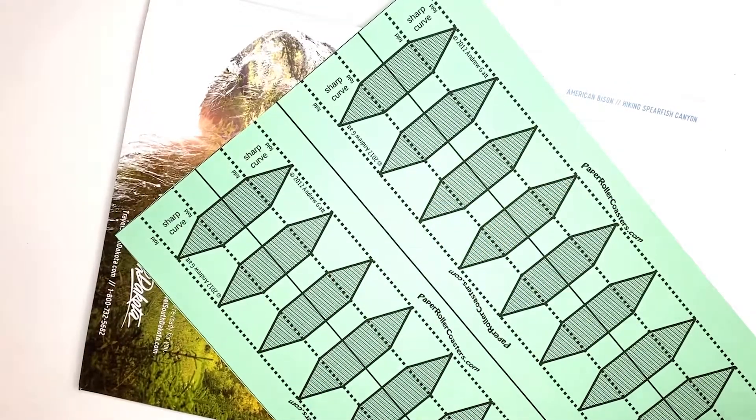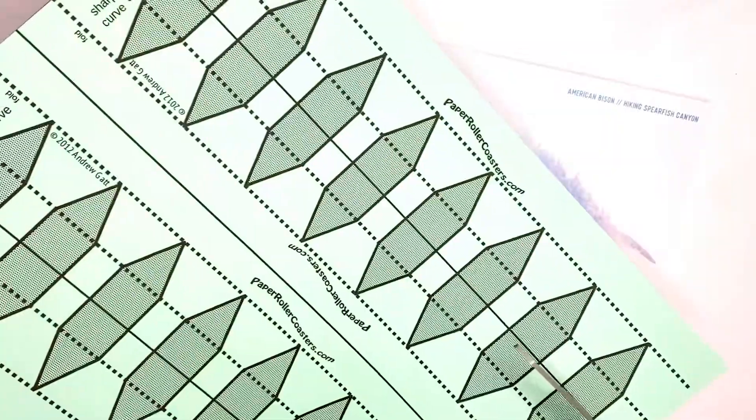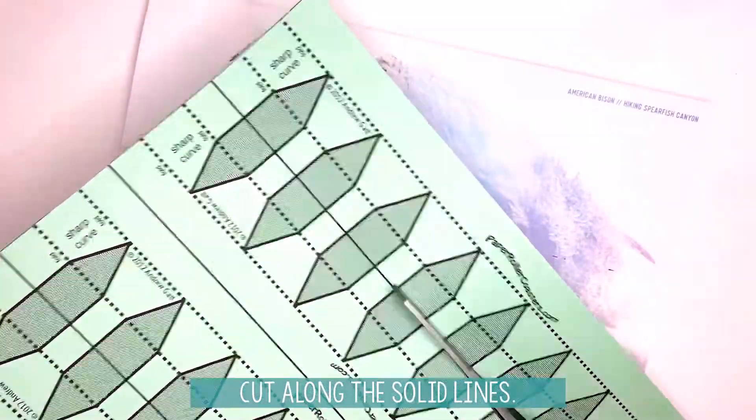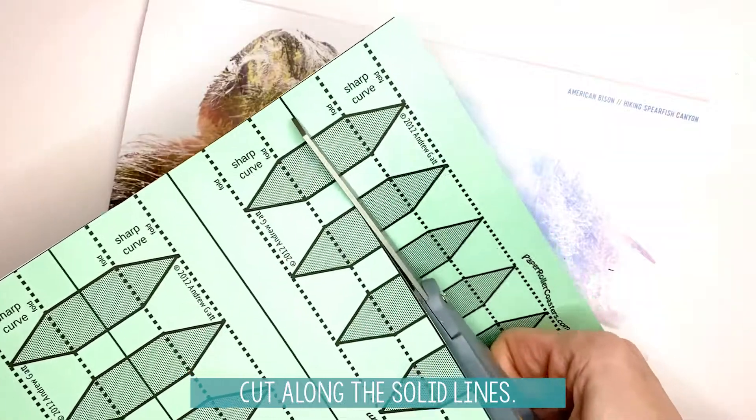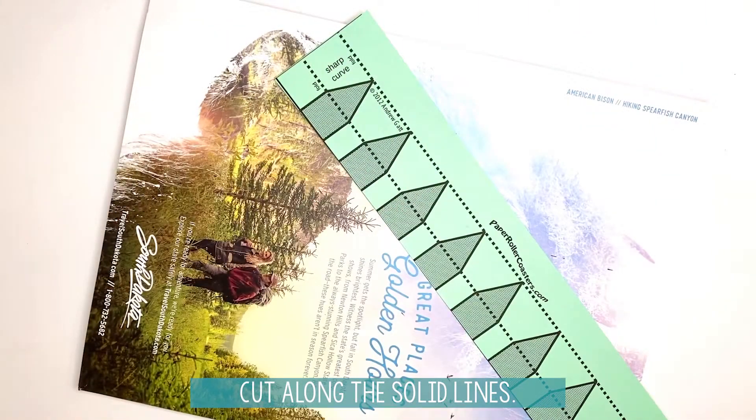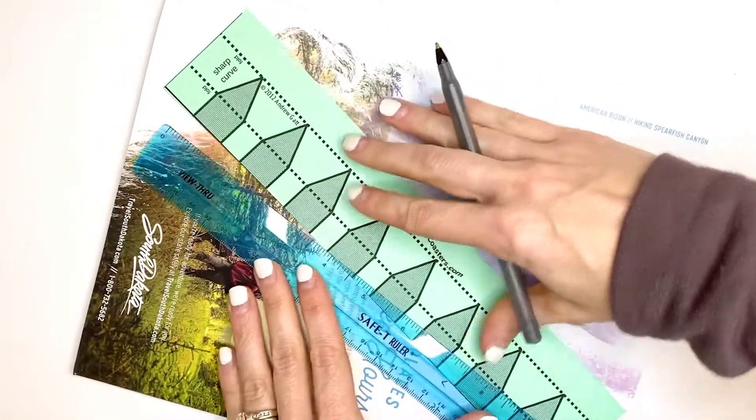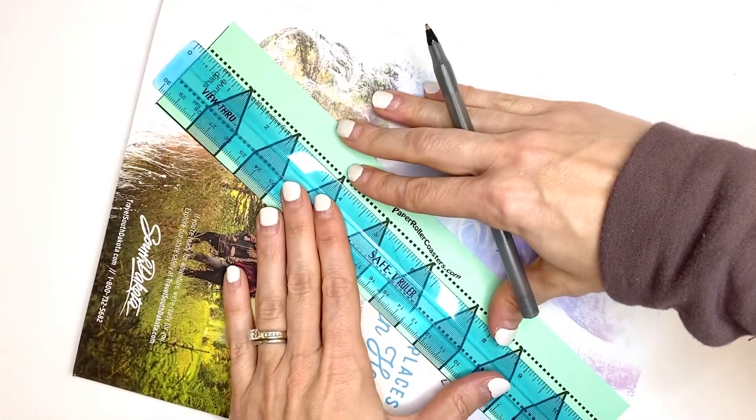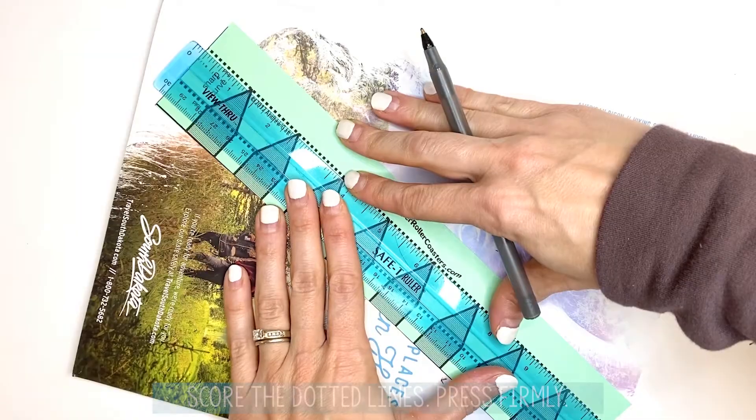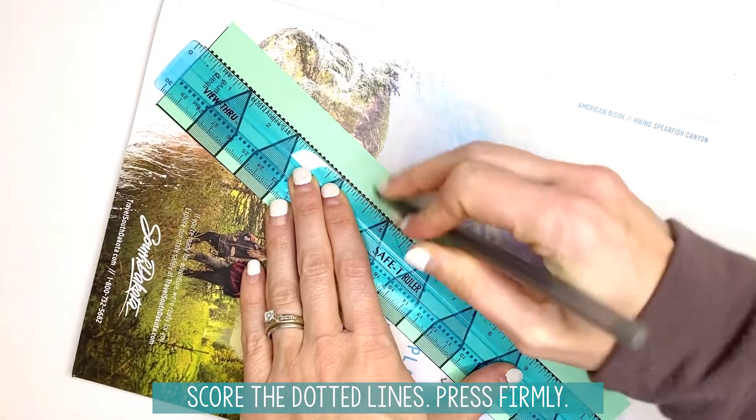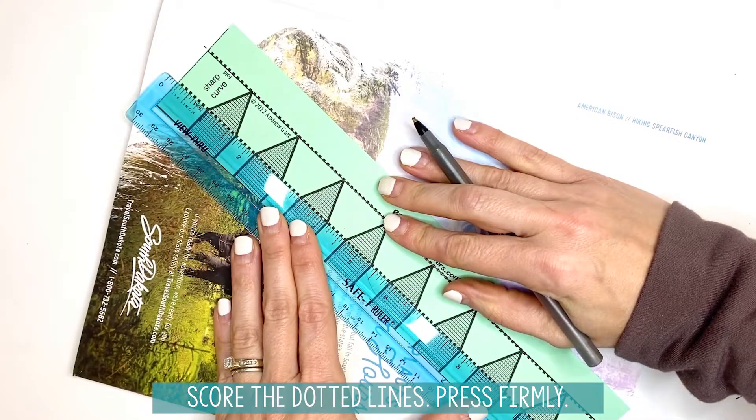What you're going to do is cut along the solid line to get one of those turns out. Then you're going to take your straight edge and your magazine again, and you're going to trace and score along the dotted line. Do the same over here.